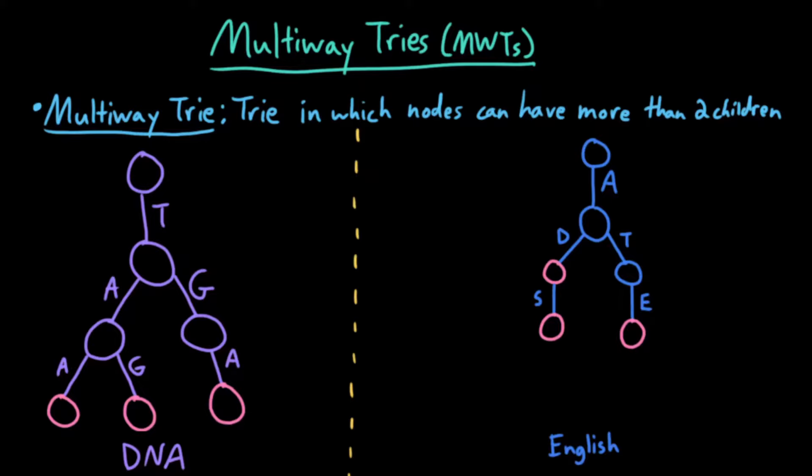With a binary trie, you may have noticed that we were only able to represent binary strings, or strings over the alphabet 0, 1. What if we wanted to generalize this?